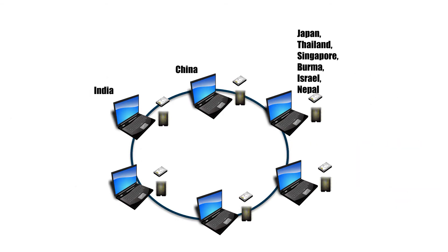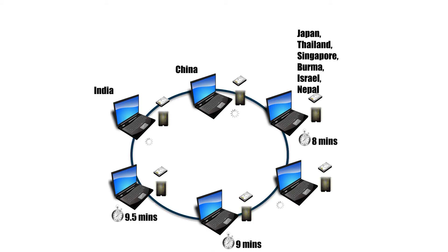Distributed data processing solves this problem. We join six machines together over the network, form a cluster, and start processing on all machines simultaneously, each working on its respective chunk of data. One machine returned results in about eight minutes, another a minute later, another 30 seconds after that, and the remaining three shortly after. This achieved the goal of processing six terabytes in 10 minutes — a speed that would never have been possible with just one single machine.